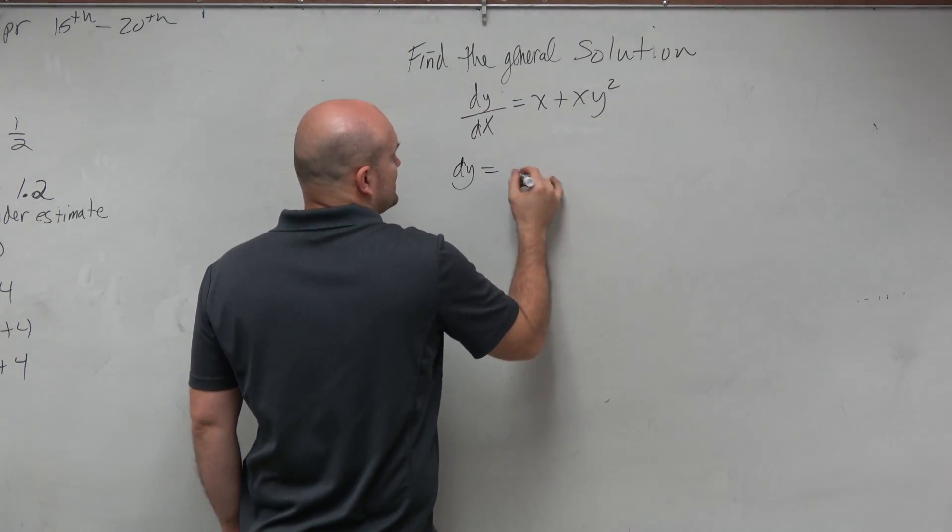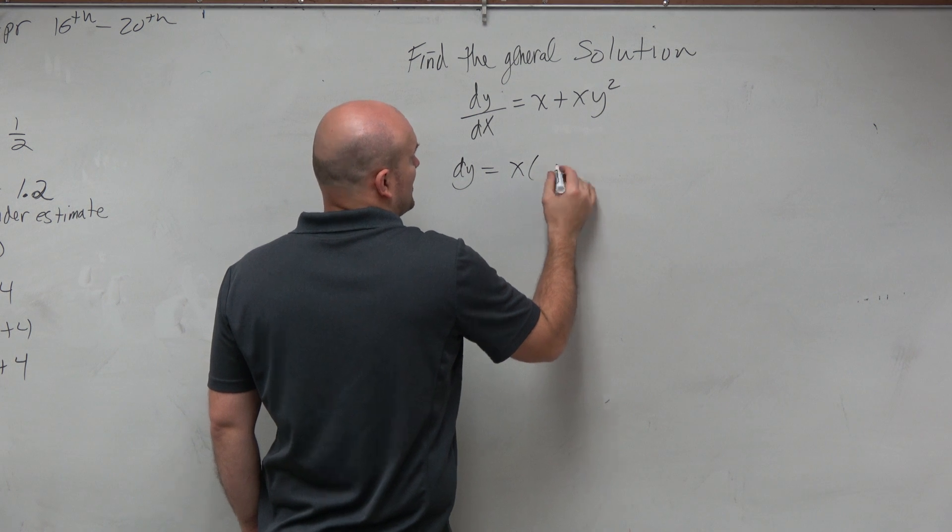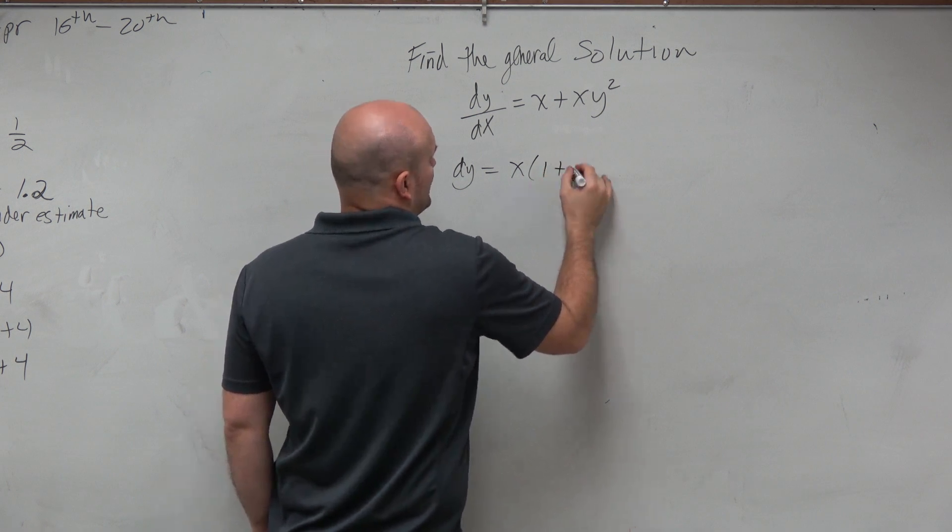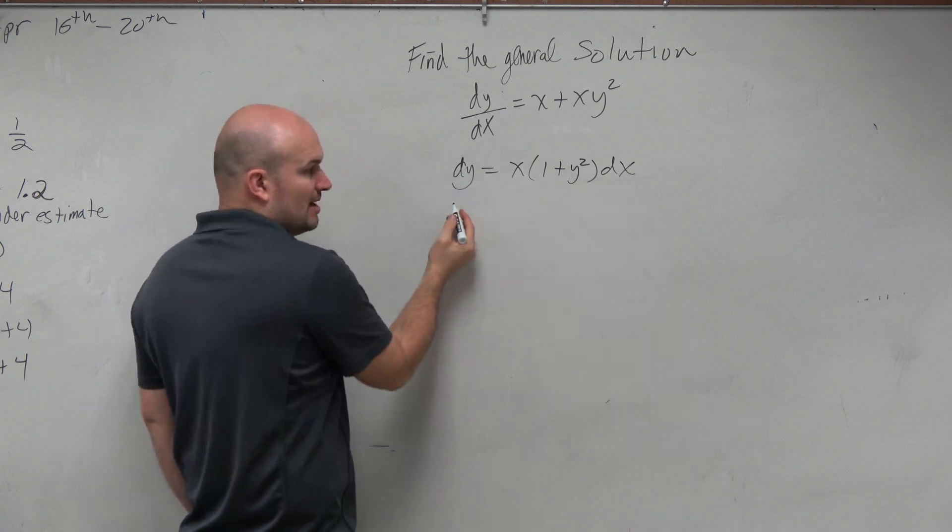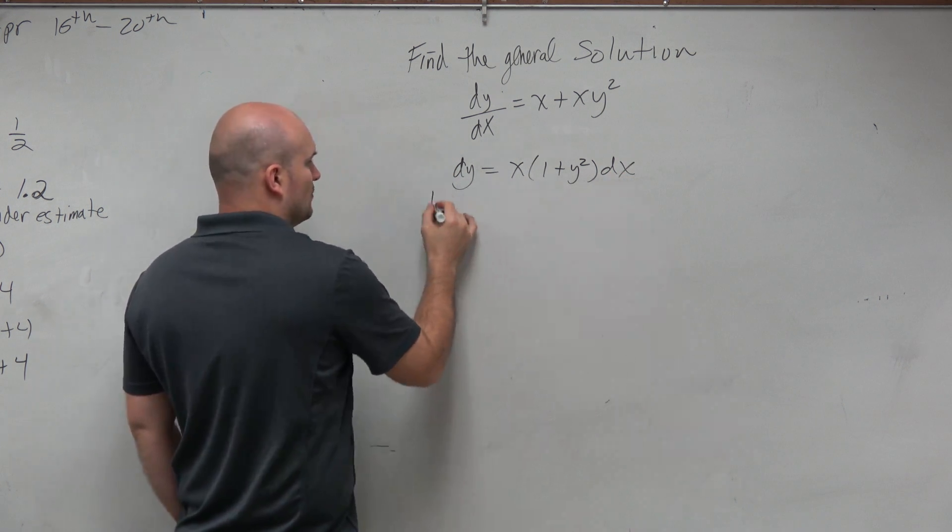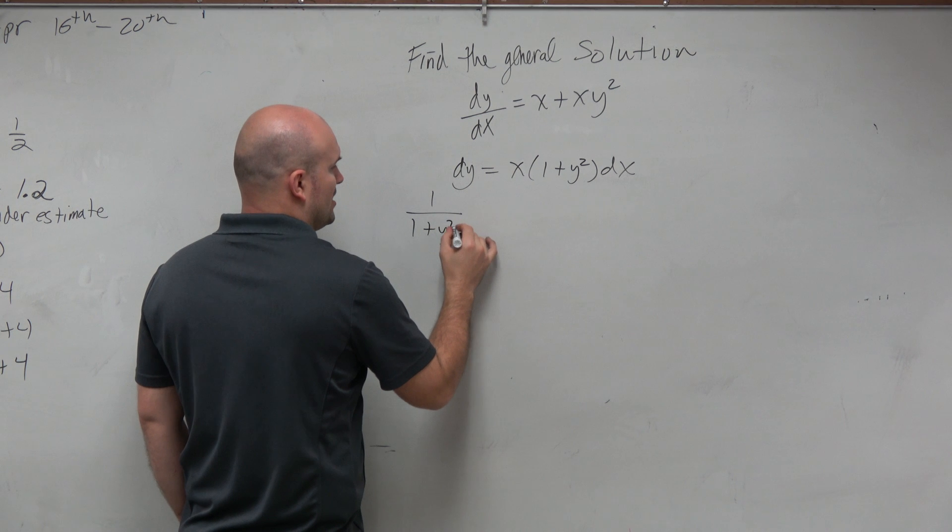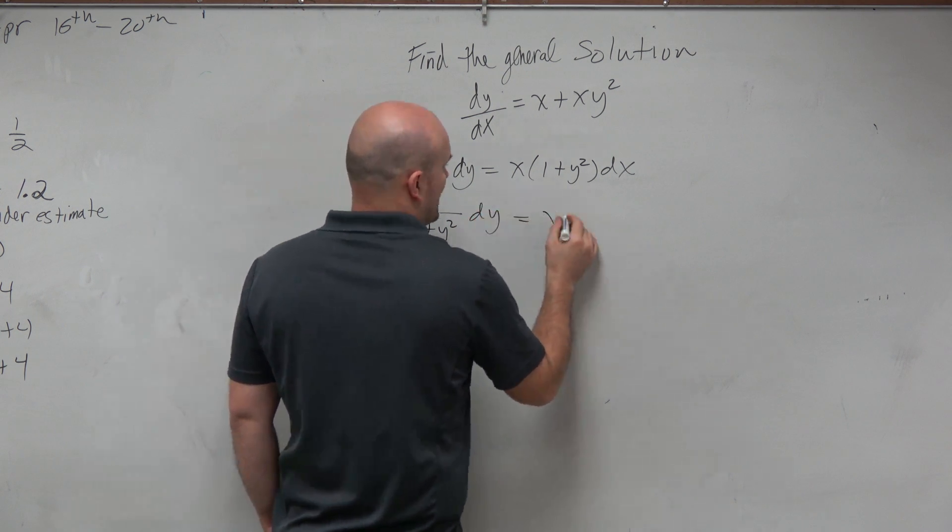So I have dy equals - factor out an x - and I'm left with 1 plus y squared times dx. I can divide by 1 plus y squared, so I have 1 over 1 plus y squared dy equals x dx.